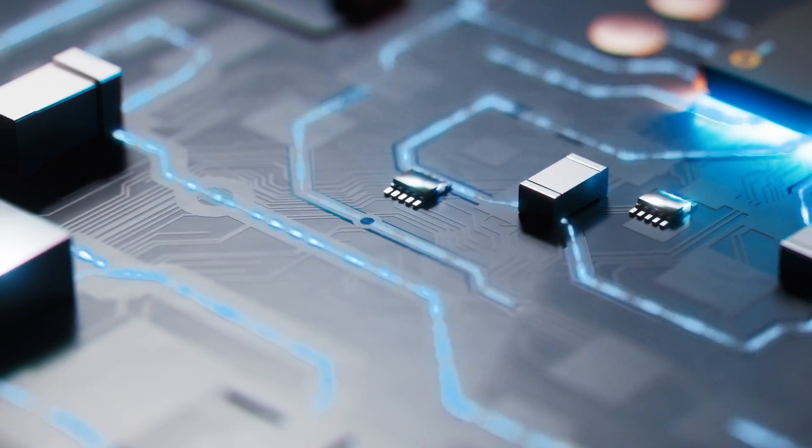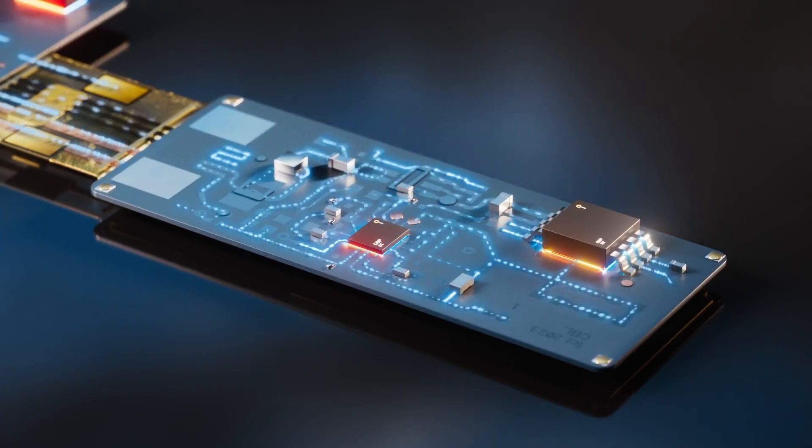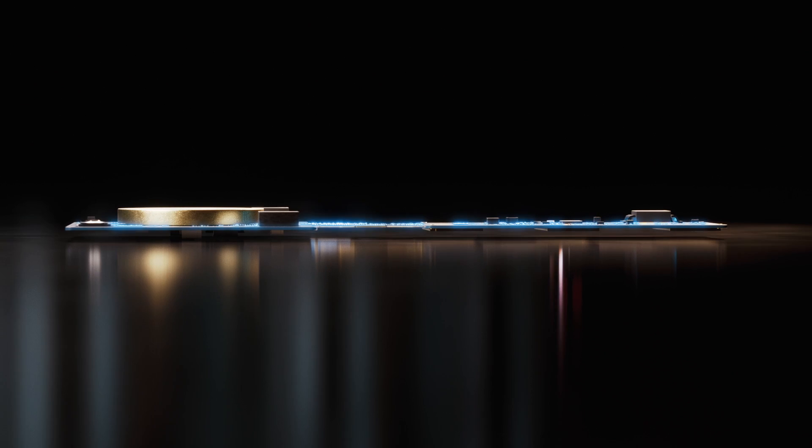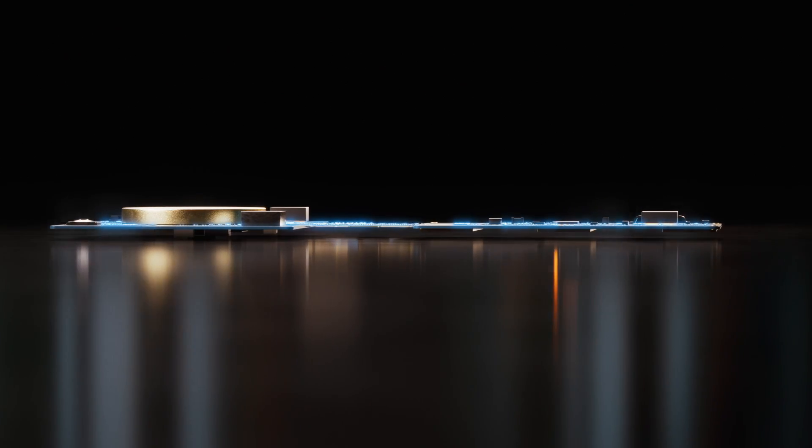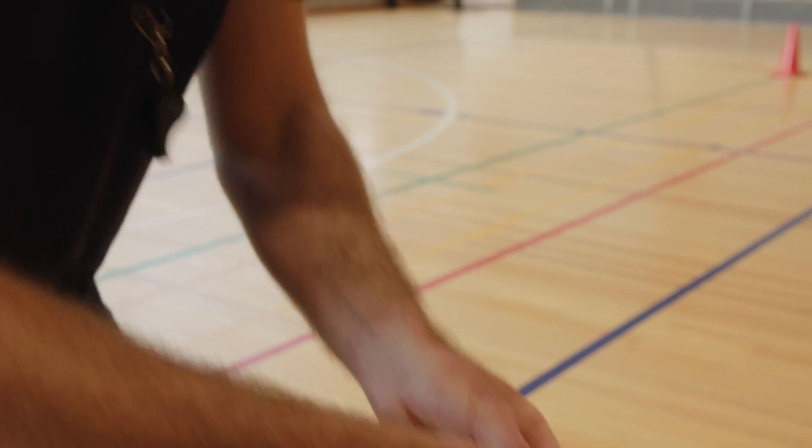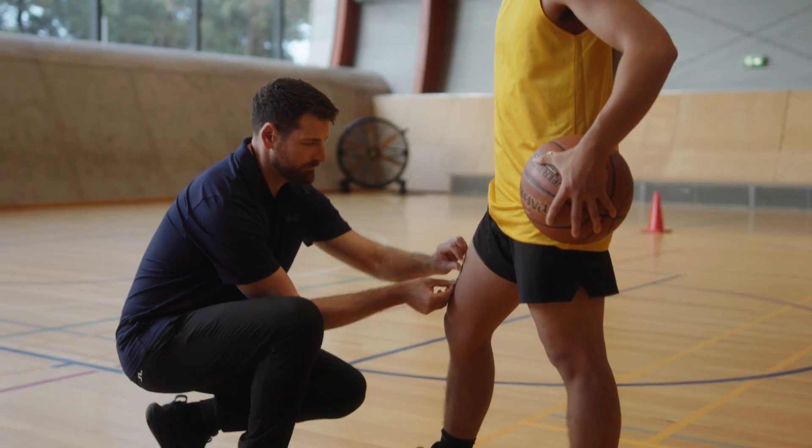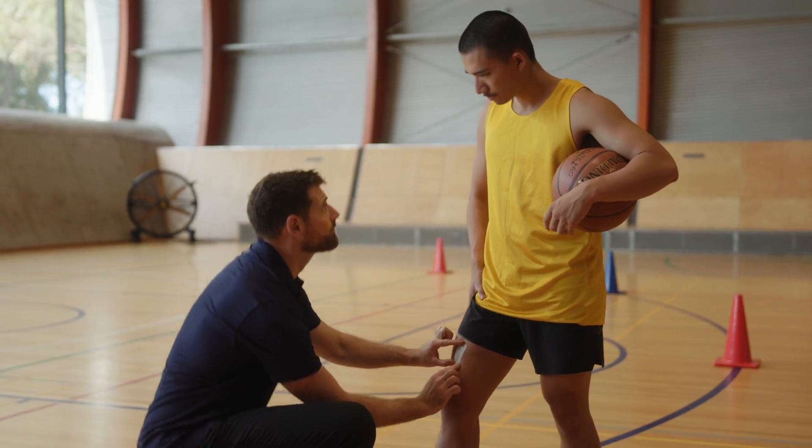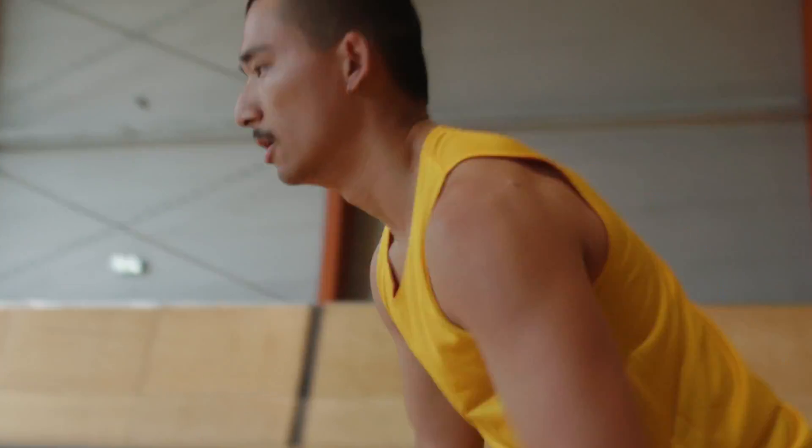The NeuroStrip brings unprecedented flexibility and accuracy to EMG devices. Unlike other devices that are restricted to a wrist or connected to external electrodes, the NeuroStrip weighs only 3 grams, is as easy to apply as a band-aid, and can be placed at almost any point on the body.